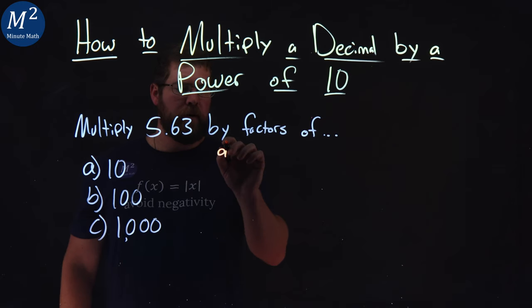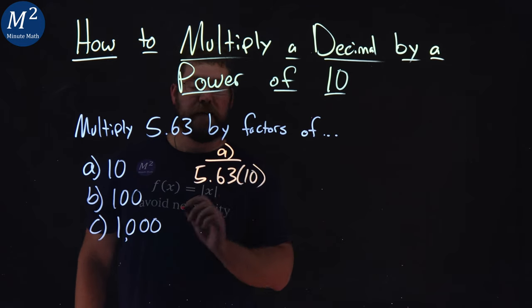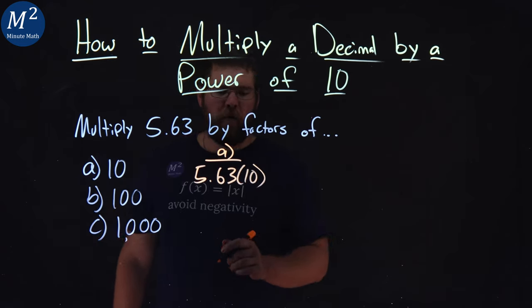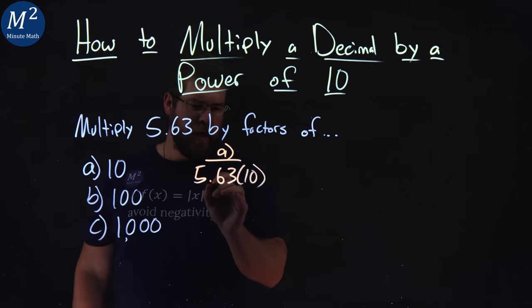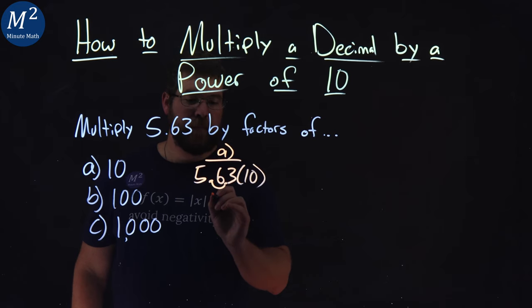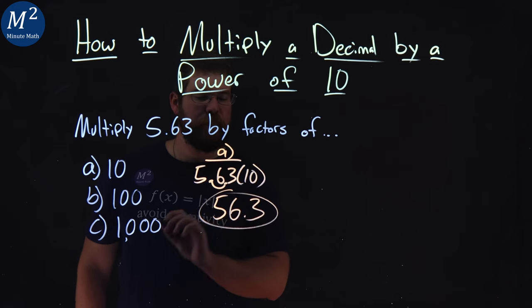Let's start with the first part, part A: 5.63 times 10. Well, if we just have a 10, this is kind of a trick with powers of 10 - we just have to move this decimal place over one unit to the right. So 5.63 times 10 is the same thing as 56.3. Not too bad.